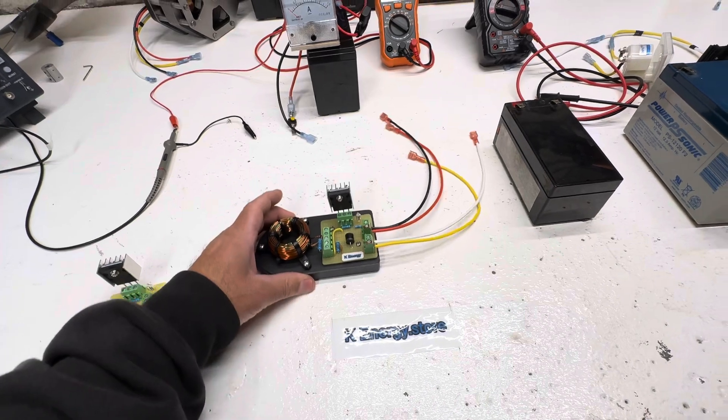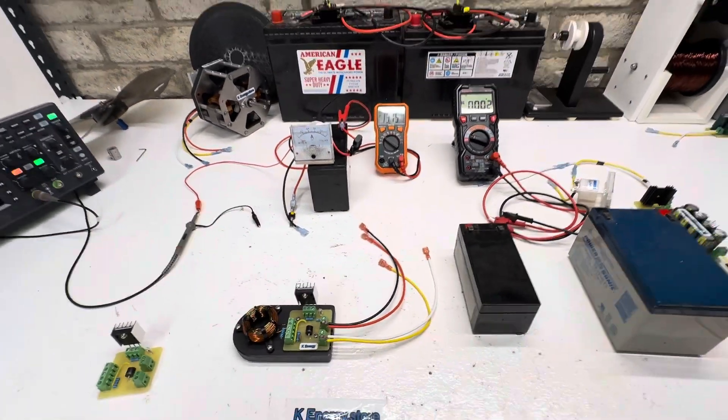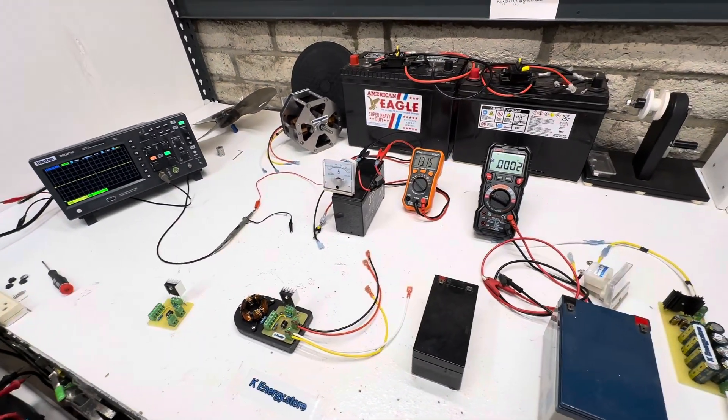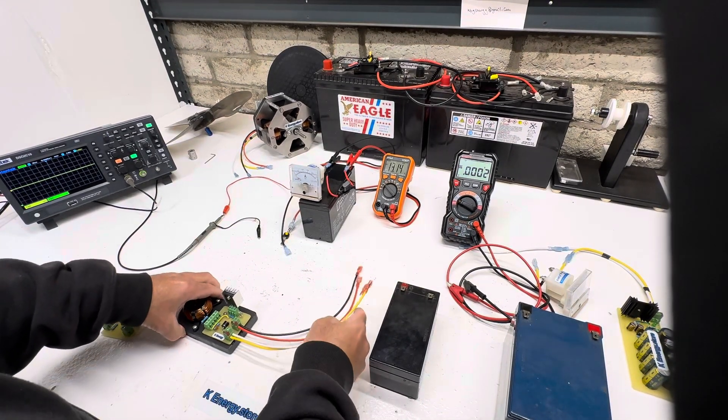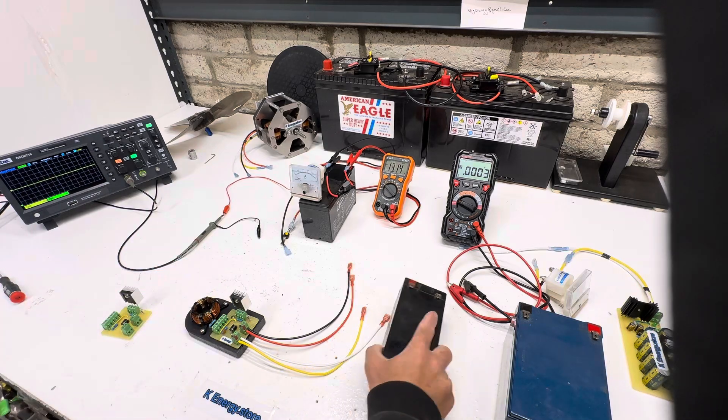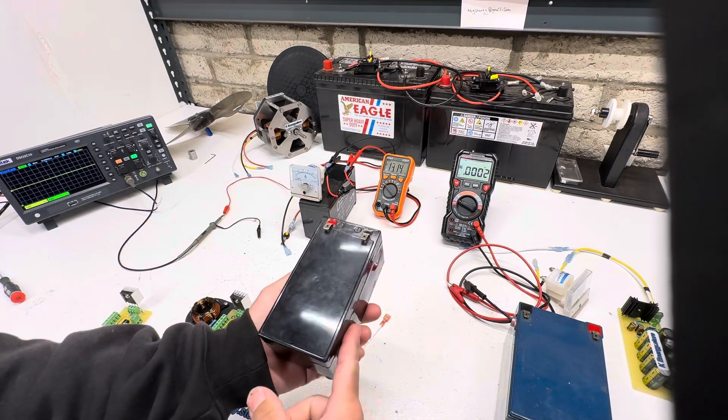What we're going to do here is set this up. We're going to hook this thing up and do a little test run with it. This oscillator was designed for batteries like this—this is a 3 amp hour.